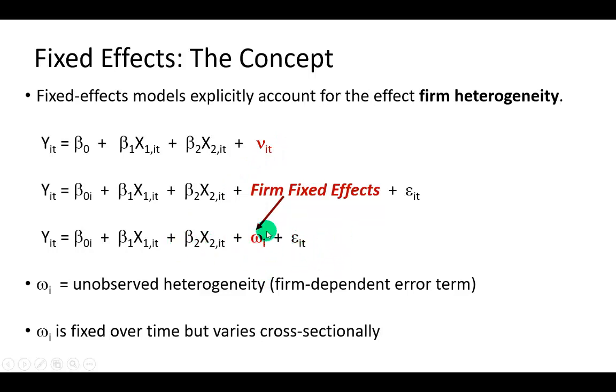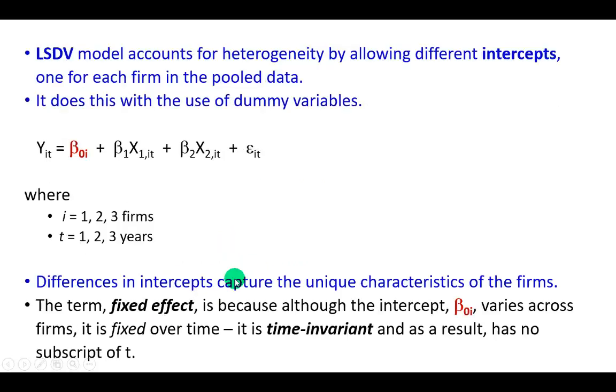The firm dependent error term Omega is what captures unobserved heterogeneity. Specific to the least squares dummy variable approach, heterogeneity is accounted for by allowing differential intercepts in the model.